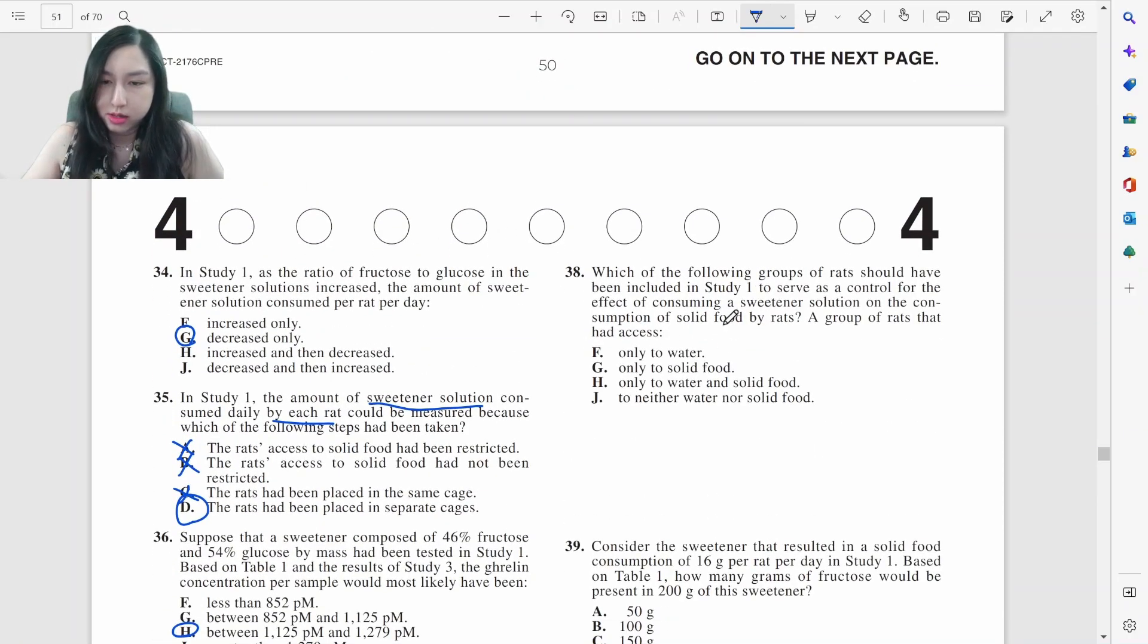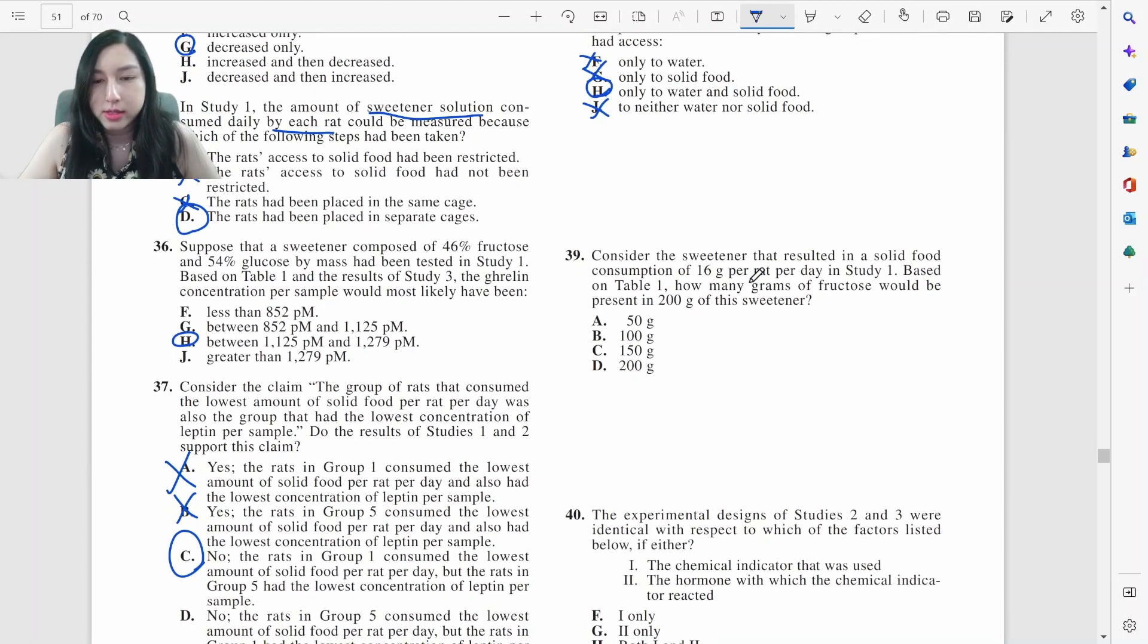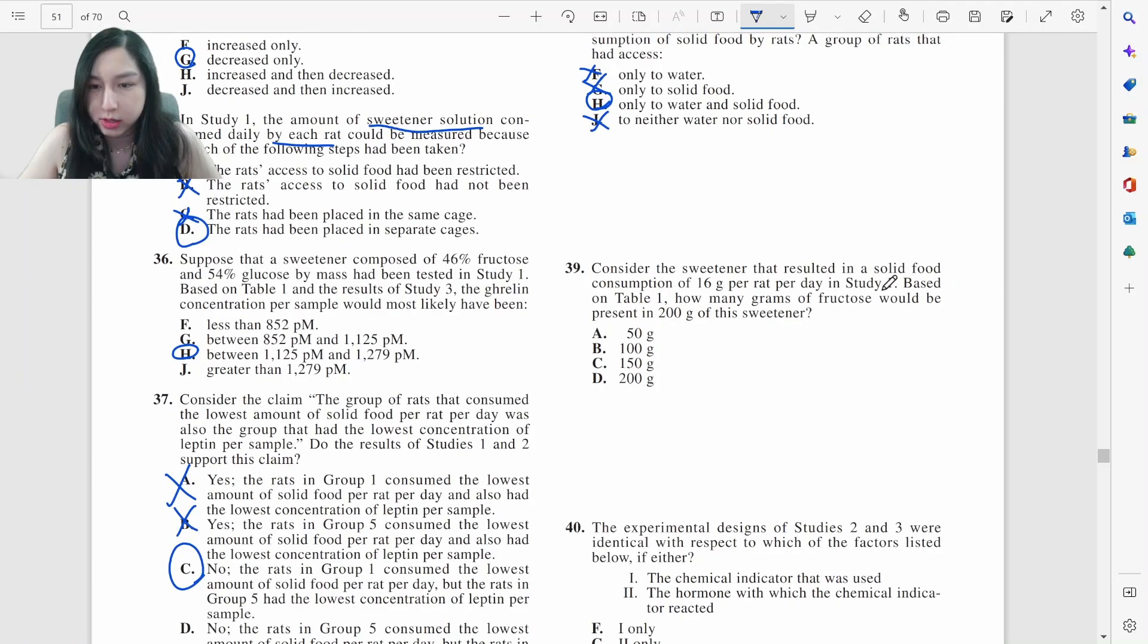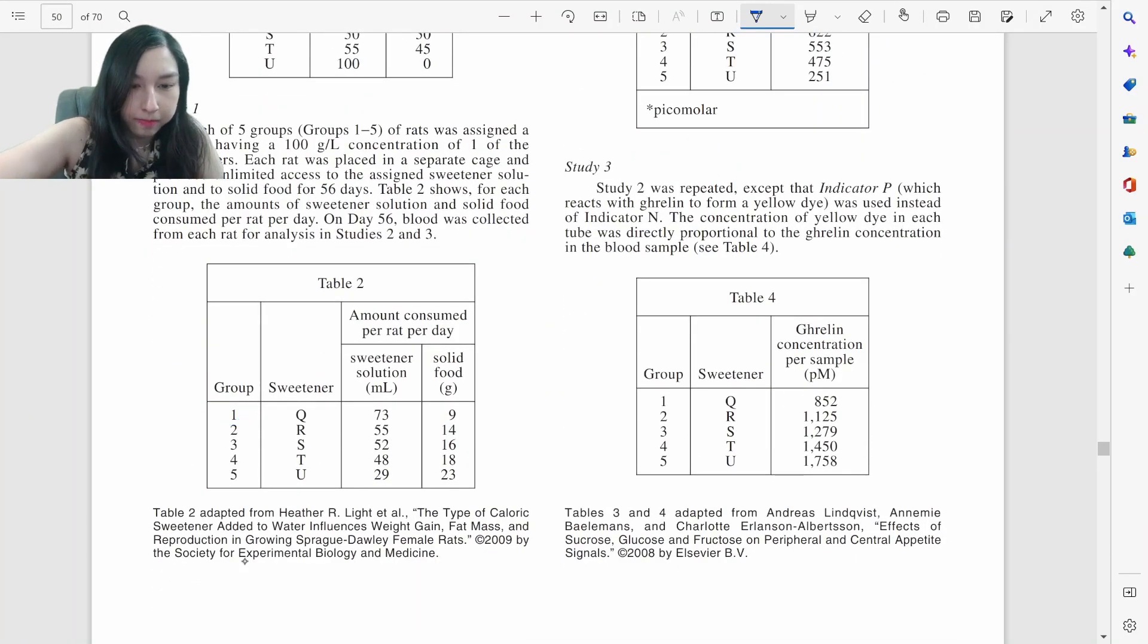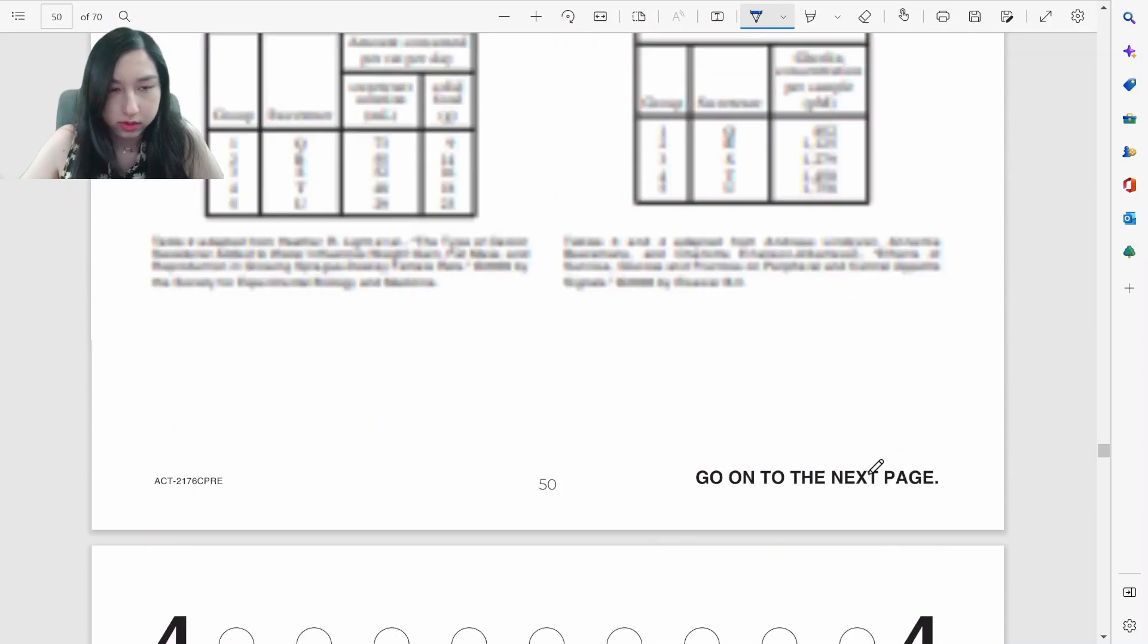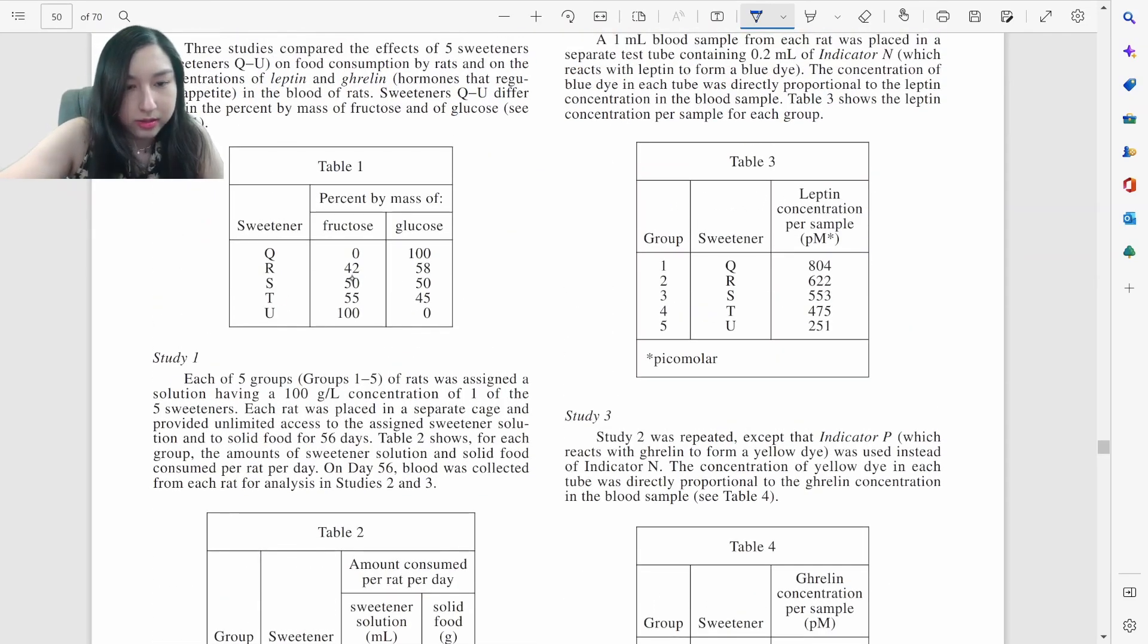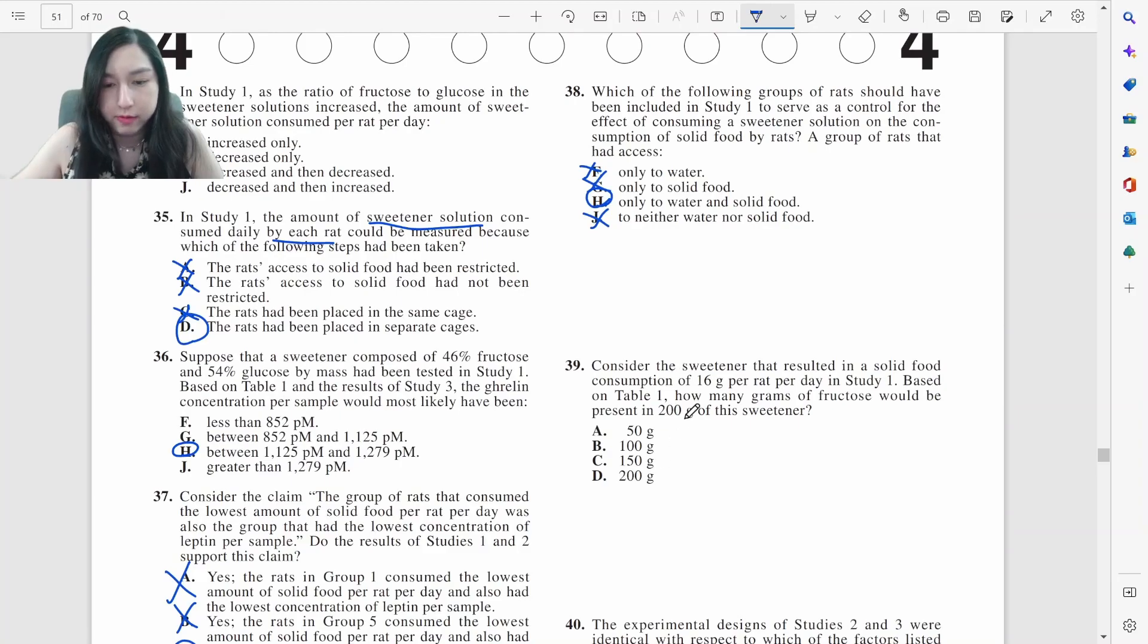Alright, let's look at 38. Which of the following groups of rats should have been included to serve as a control? Only water or least? It cannot be neither water nor solid food. The rats would die. And actually by the same principle, it can't be F or G because you have to have both food and water to survive. So it has to be H. Let's look at number 39. Consider the sweetener that result in solid food consumption of 16 grams. Solid food 16 would be group three. Based on table one, how many grams of fructose? That's group three, which is sweetener S. And sweetener S is 50% fructose. So 50% of 200 is going to be 100.